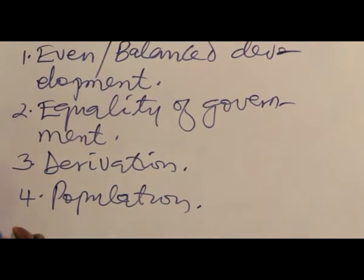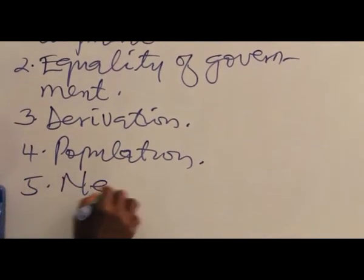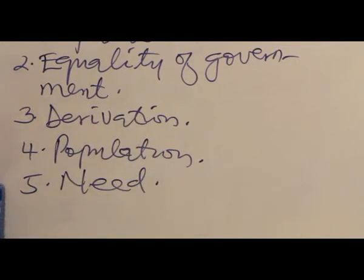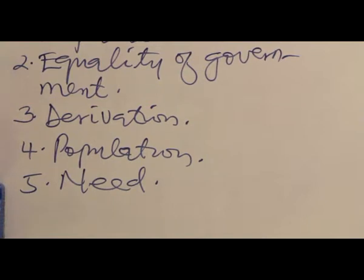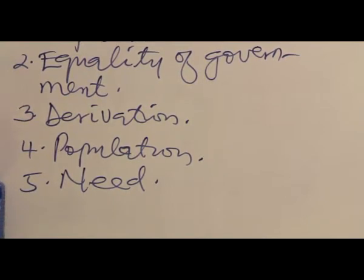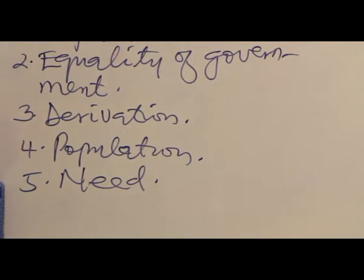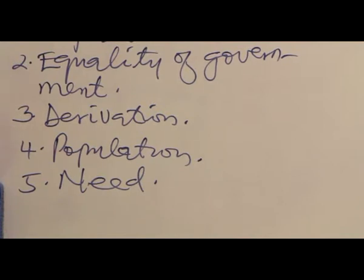Five, the criteria of need. This is based on the peculiarity of a place. For example, the Niger Delta, where oil is produced in Nigeria, may have specific needs like road construction through the swamp and the construction of bridges. Under such conditions, government has an allocation to make for it.